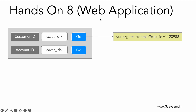Clicking the Go button should convert to an API call. We have a base URL which is the IP address followed by the port number, and then the URL endpoint would be 'get_cust_details'. This 'get_cust_details' would be there in the app.route decorator, and along with it we'll pass the variable cust_id equal to a certain value — for example, 1120988. Whatever we write, we have to pass it using the cust_id variable.